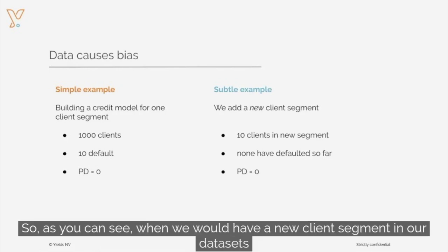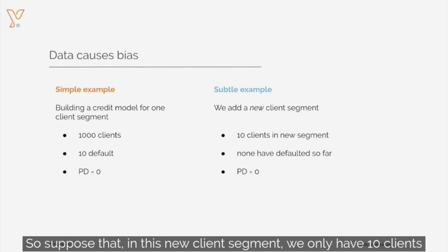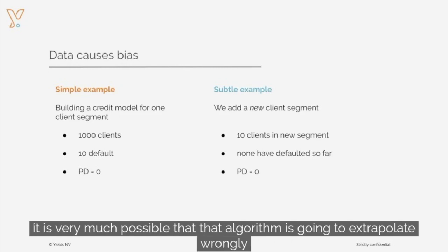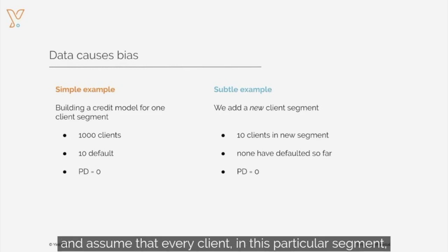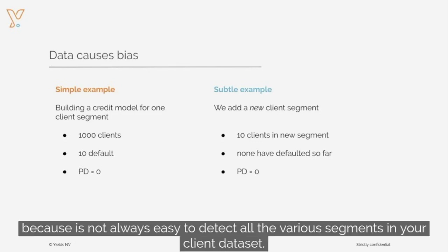Suppose that we have a new client segment in our dataset. In the early phases, we don't have a lot of data. So suppose that in this new client segment we only have 10 clients, and none have defaulted so far. Using an algorithm that extrapolates to make a prediction on the probability of default, it's very possible that the algorithm is going to extrapolate wrongly and assume that every client in this particular segment will have a zero probability of default. This example is a bit more intricate because it's not always easy to detect all the various segments in your client datasets.